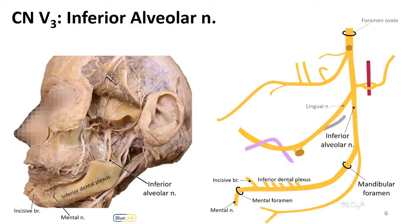In terms of an inferior alveolar nerve block, this will affect the branches to the mandibular teeth on that same side — the incisive branch and the inferior dental plexus — as well as the mental nerve, which will lead to some numbness around the area of the chin.